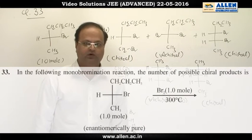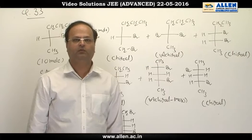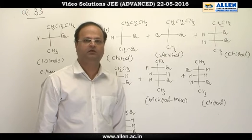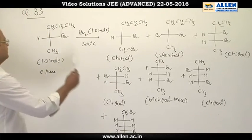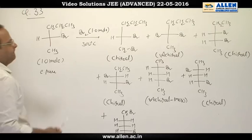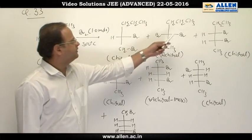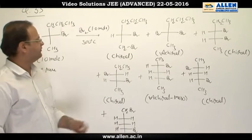Question number 33 is about monobromination of an enantiomerically pure 2-bromopentane. When it is subjected to monobromination, bromine can be introduced theoretically on each carbon: first carbon, second, third, fourth, and fifth.